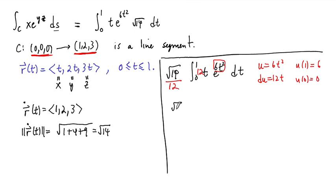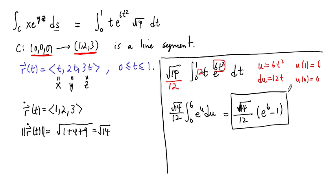And so our integral now becomes square root of 14 over 12. Integral from 0 to 6, e to the u du. And no problem there, right? So our answer is that this should be square root of 14 over 12 times the difference e to the 6 minus e to the 0, or just 1. All right, and so that's the path integral of this function along this path in three-dimensional space.